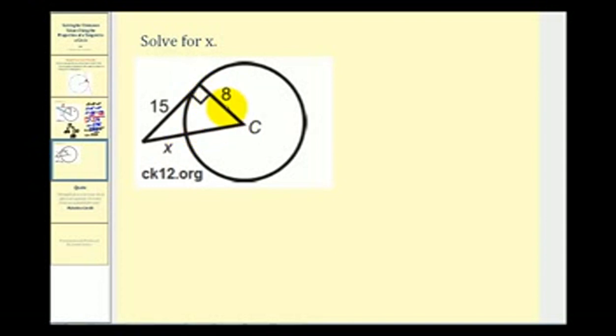So we know we have a right angle here. So now that we have a right triangle, we can use the Pythagorean theorem to determine the value of X. But notice how now we're going to be solving for the hypotenuse.